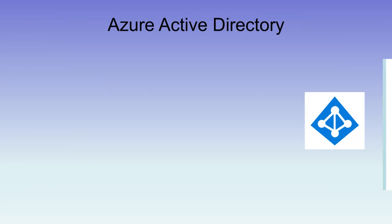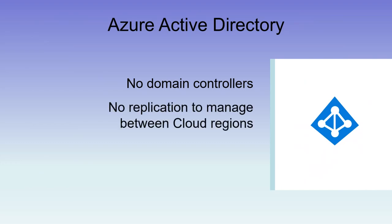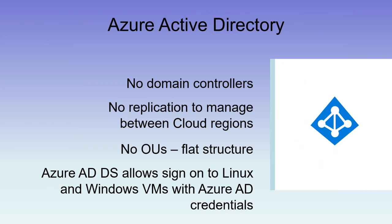And we have our Azure Active Directory — there are no domain controllers, no replication between cloud regions, it's all across the entire infrastructure. It's flat, there are no OUs, there are no group policies. There is a service called Azure Active Directory Domain Services, which is a highly available, scalable system that allows you to effectively fire up domain controllers managed by your Azure Active Directory — a managed domain which allows VMs in Azure to sign in with Azure AD and join the domain for Windows VMs.